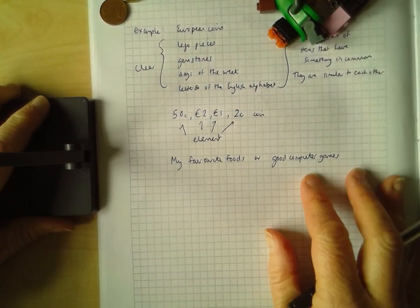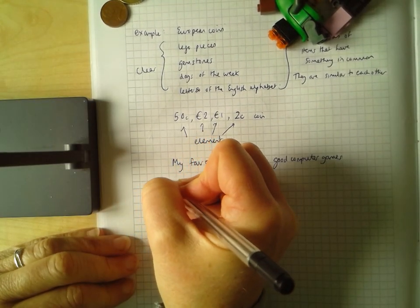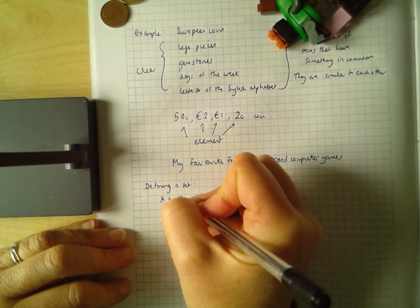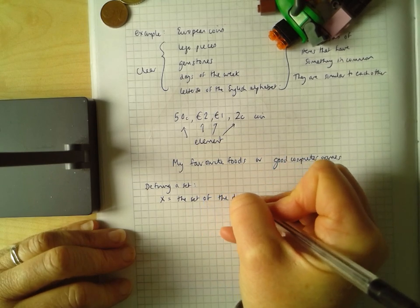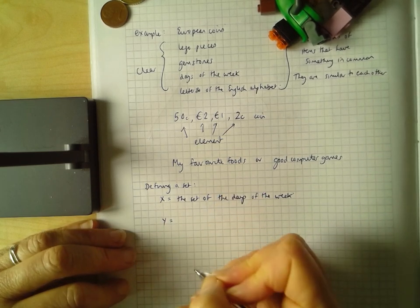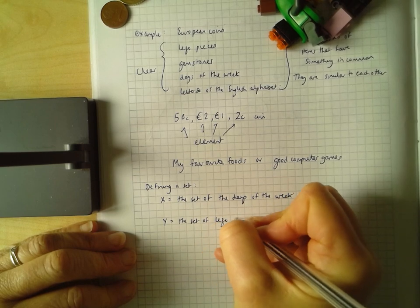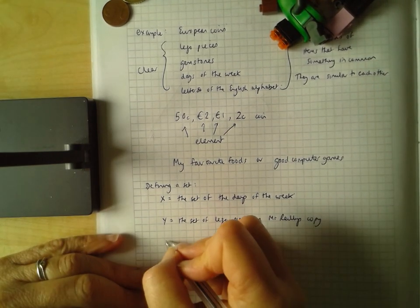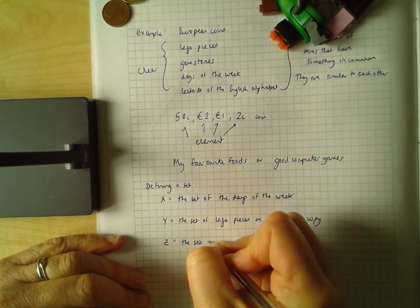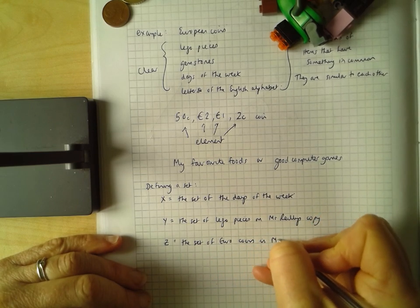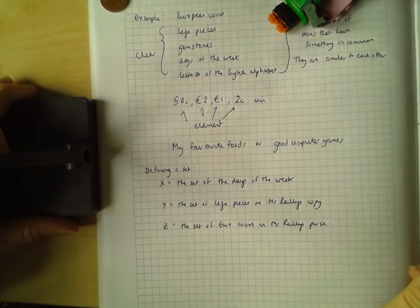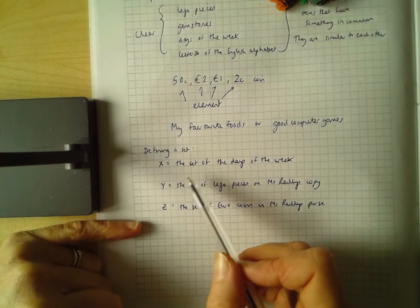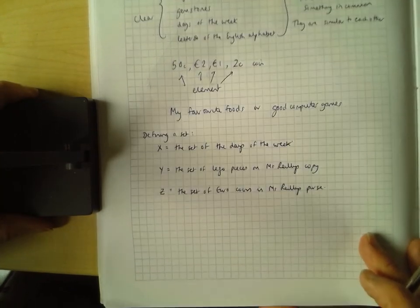So this is describing a set. Now, to make it a bit more mathematical, we have what's called defining a set. So for instance, we might have the set X equals the set of the days of the week. We might have Y equals the set of Lego pieces on Miss Riley's copy. Because if we covered all the Lego pieces in our house, she would be there forever. Z might be the set of Euro coins in Miss Riley's purse. And that's how you would define them mathematically. We give the set a name, usually a capital letter like X or Y or Z or A or B. And then we put X equals the set of the days of the week. X equals the set of Lego pieces.